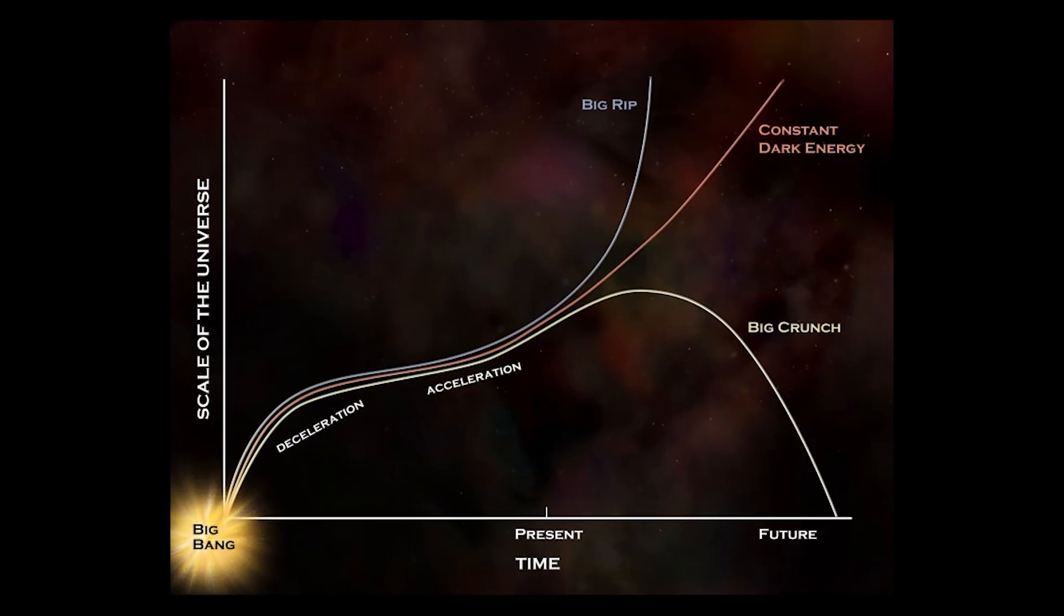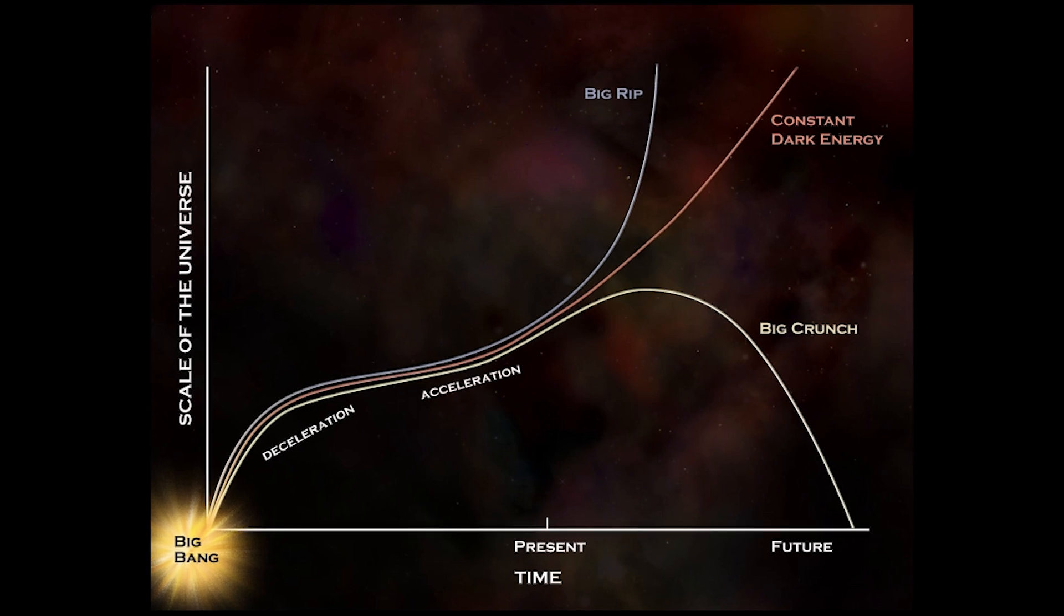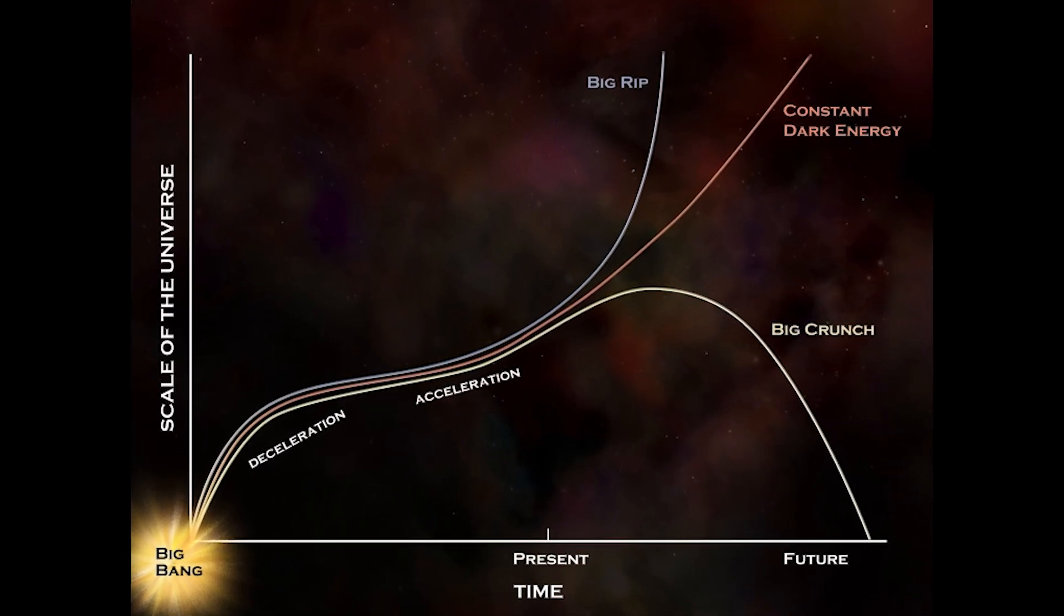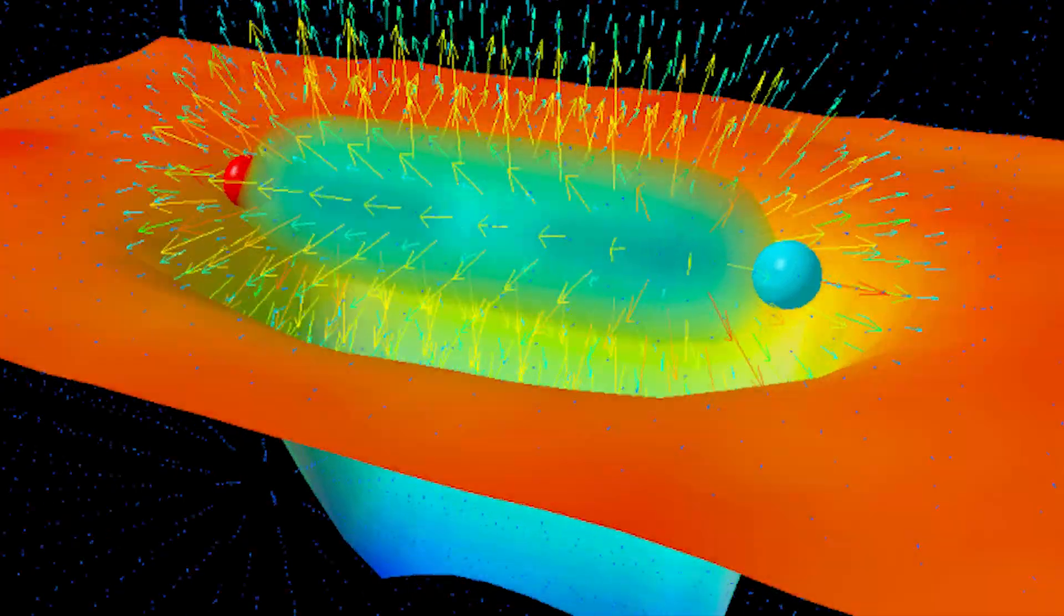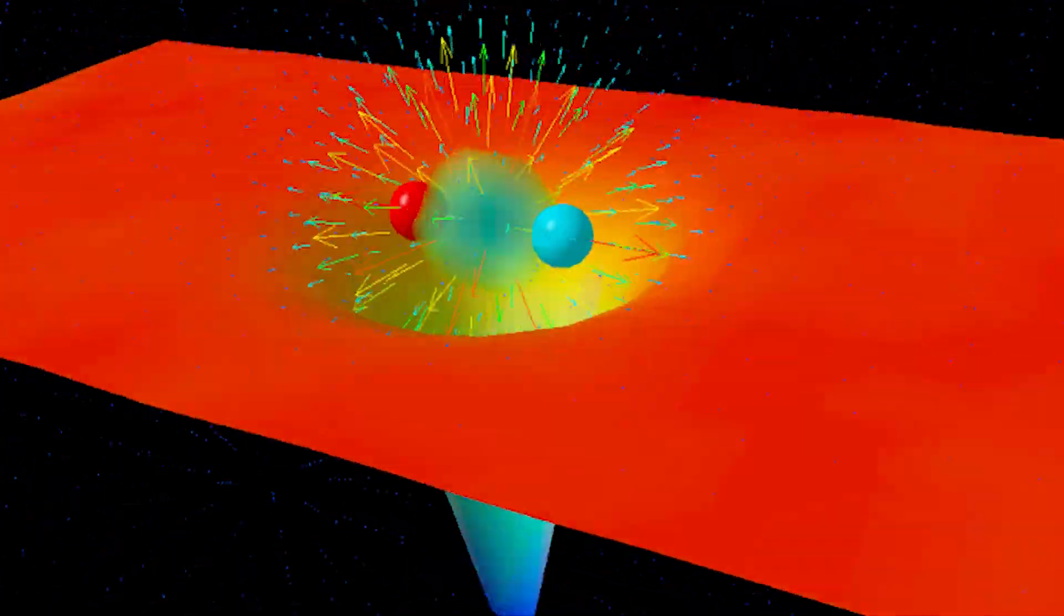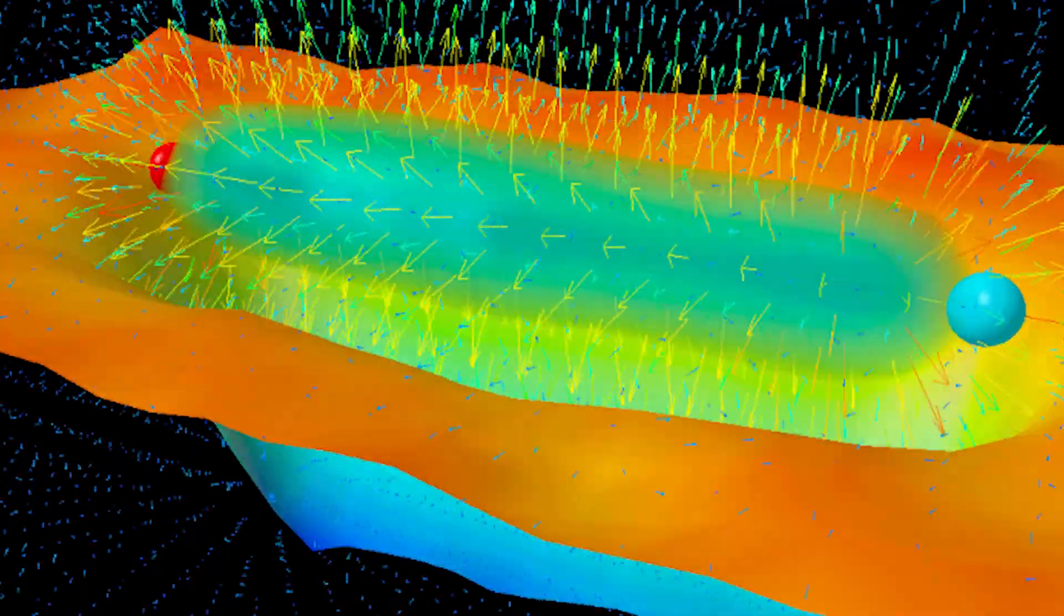If dark energy is truly constant, as the data suggests, it will continue to follow the red curve, resulting in the long-term scenario frequently described as the eventual heat death of the universe. If dark energy evolves over time, a big rip or a big crunch are still admissible, but we have no proof that this evolution is more than an idle speculation.